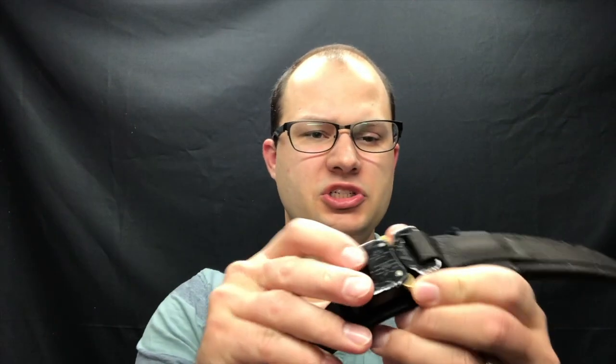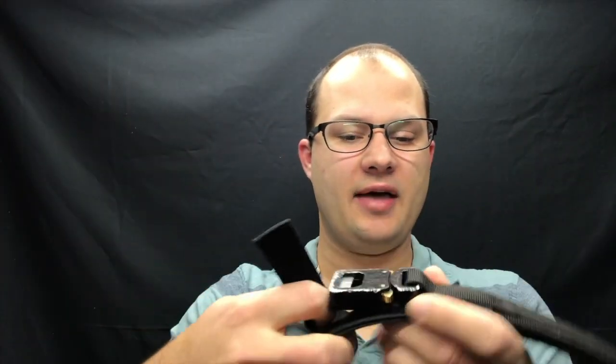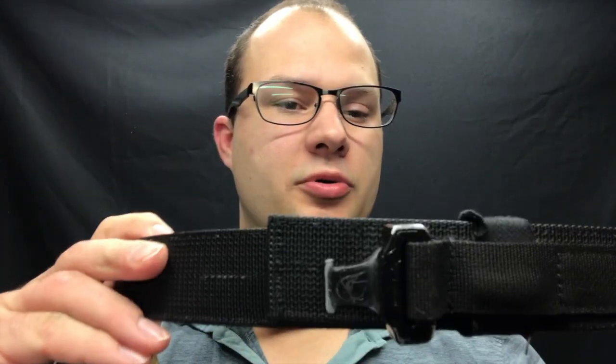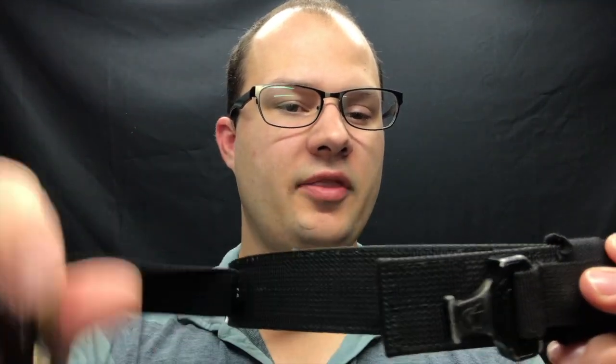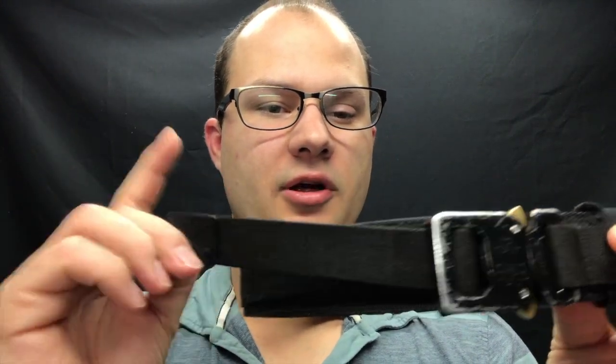The buckle system for this thing I have a love-hate relationship with. So it has this cobra buckle here. So you take this, you feed that through your cobra buckle, which I will do right now. So it feeds through like that. So you put your belt on, right? And then you take your cobra buckle, come through, buckle yourself up, and then tighten down here.